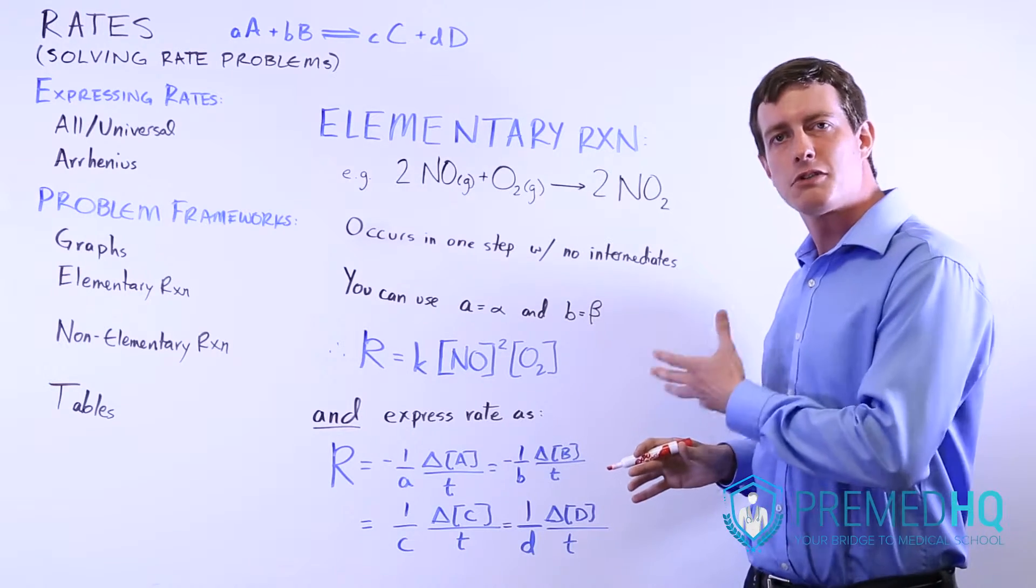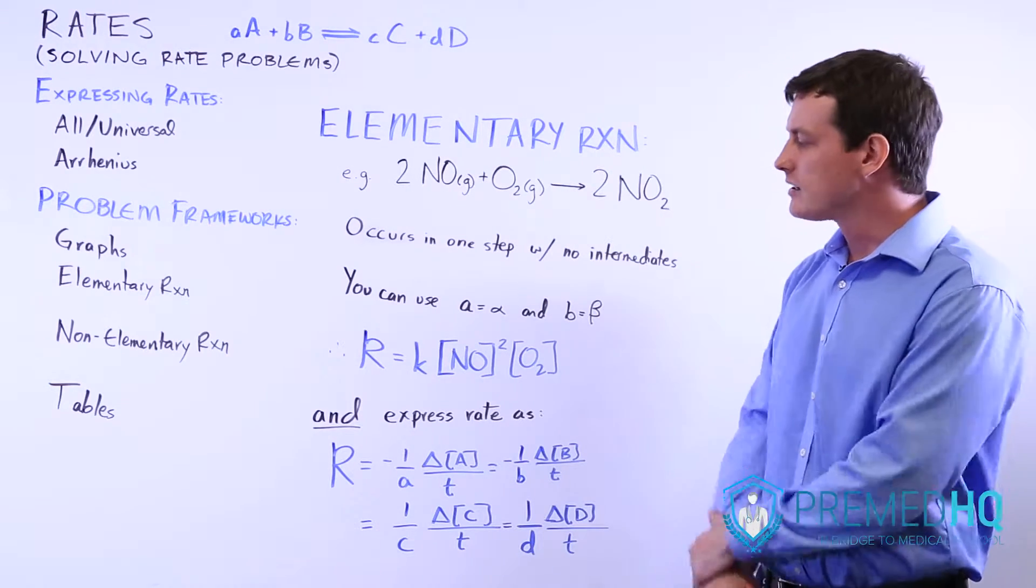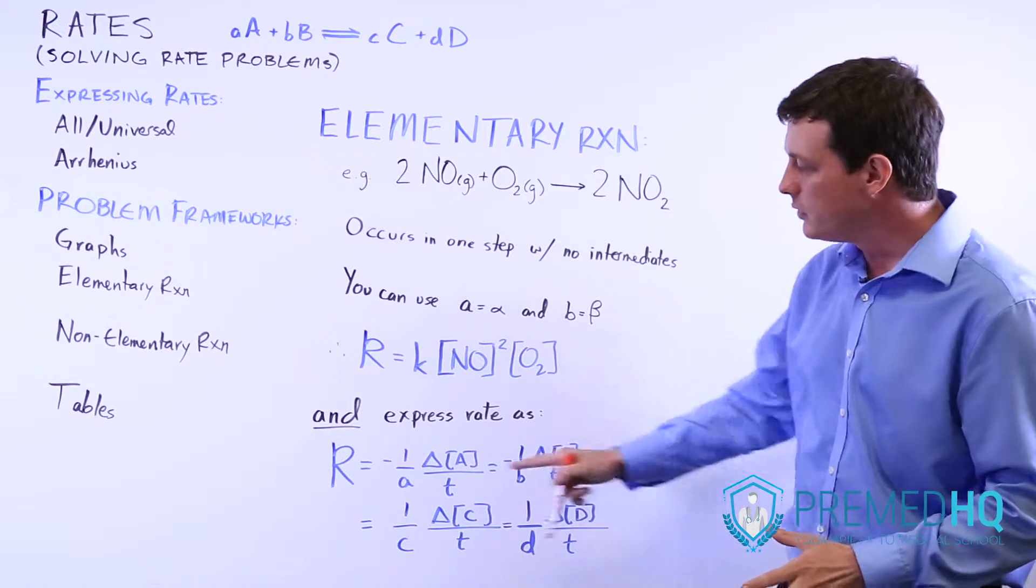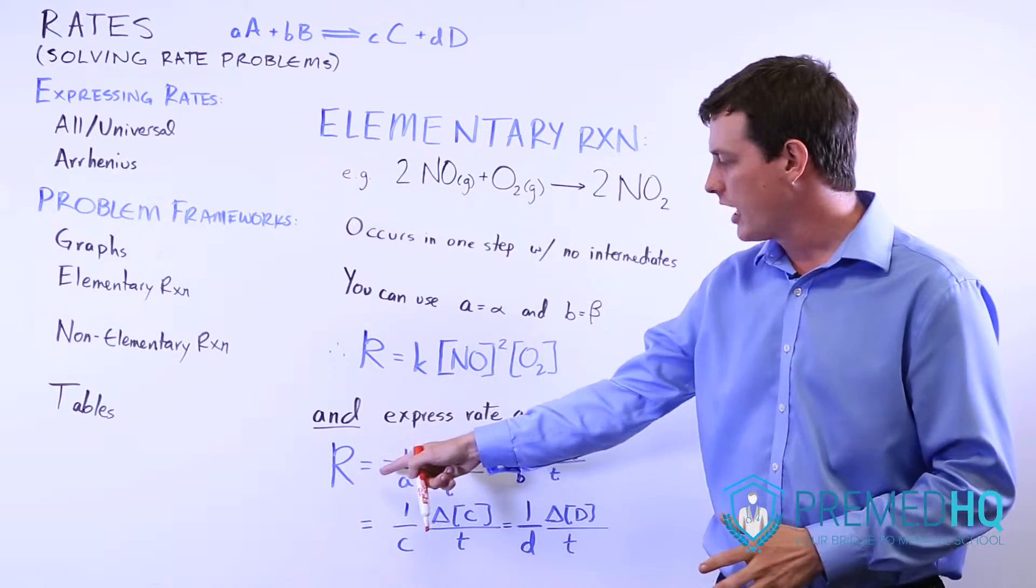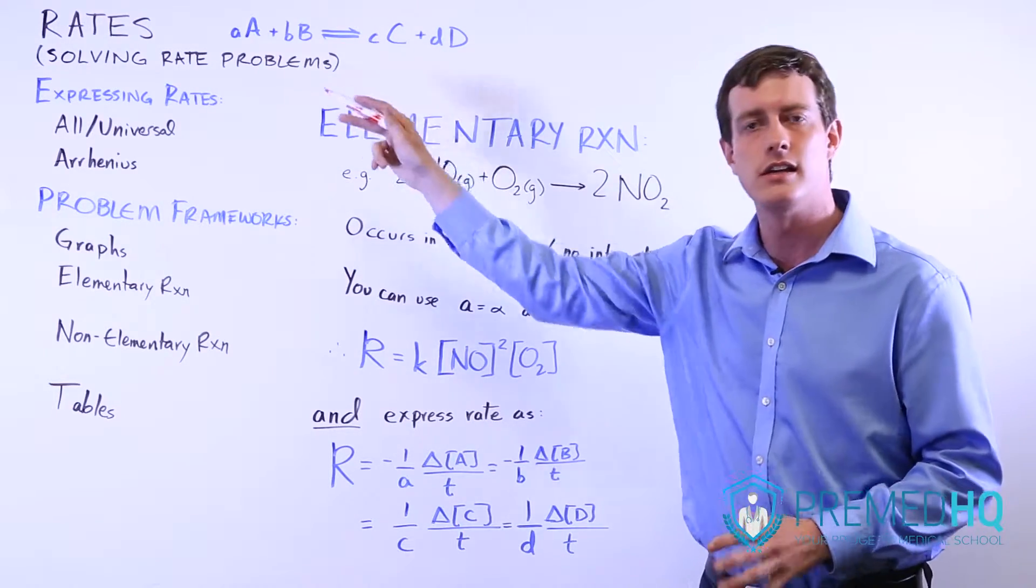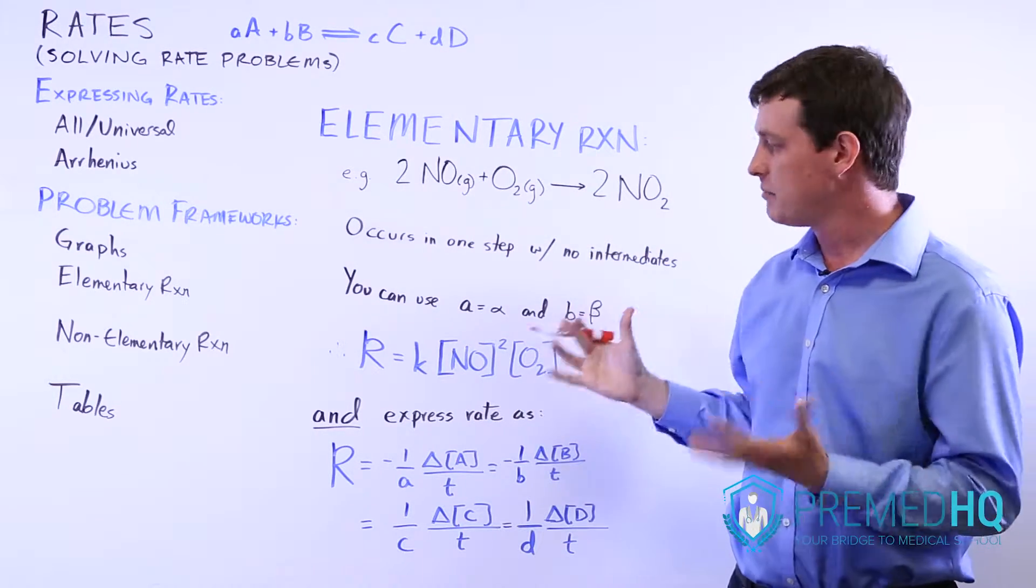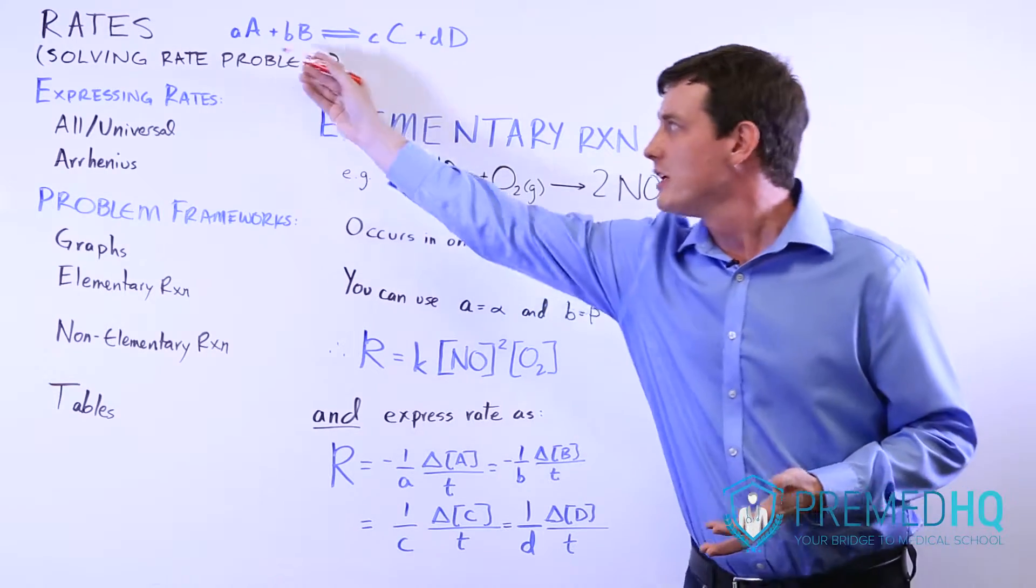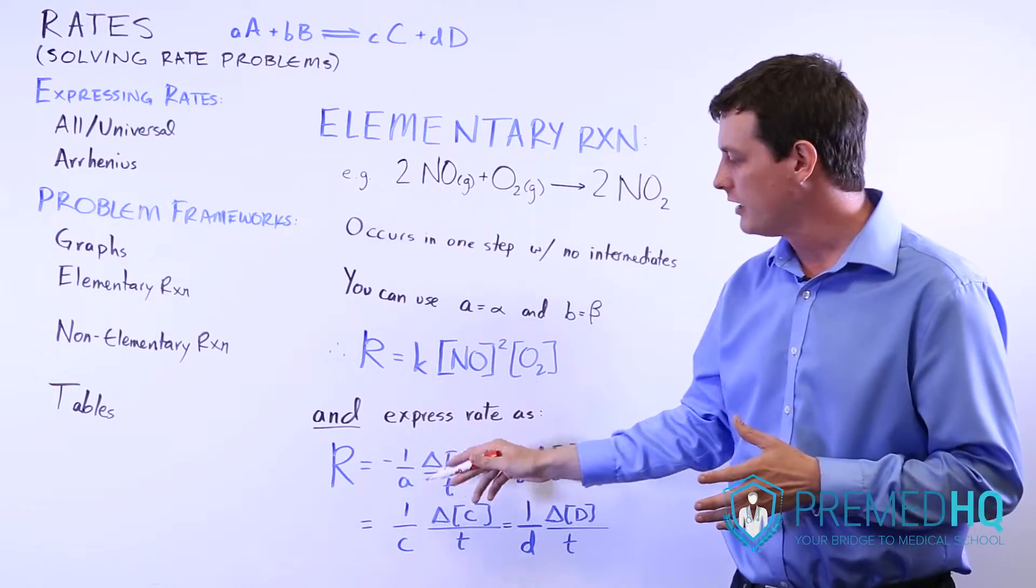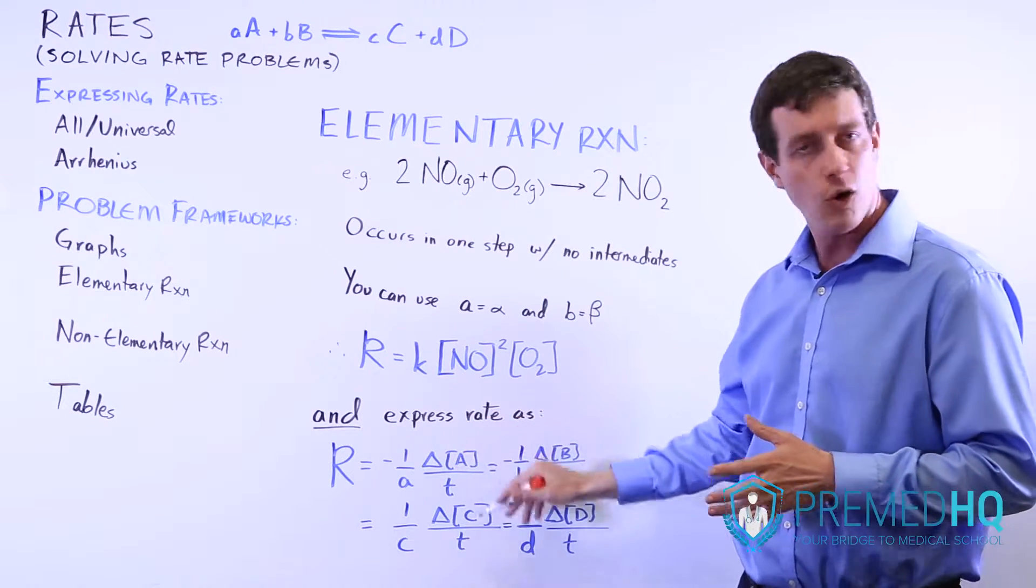The other thing that an elementary reaction allows you to do is it allows you to express the rate in various ways. You can express the rate of this reaction as negative one over A, where A is the stoichiometry. Because it's elementary, the stoichiometry is also the order. It's going to be negative one over A times the change in A over time.